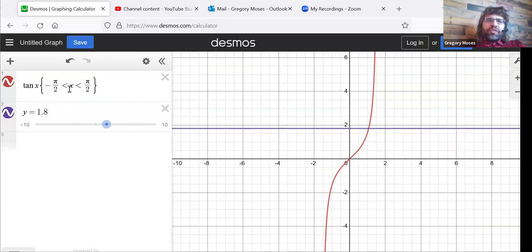The only difference is that with the sine, we included these endpoints. With the tangent, we don't, because the tangent isn't defined at pi over two or negative pi over two.